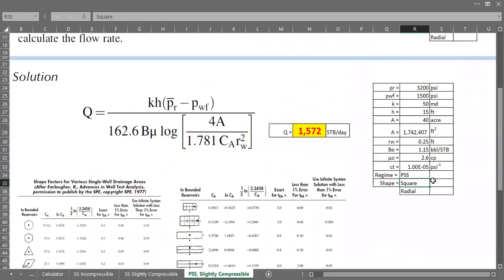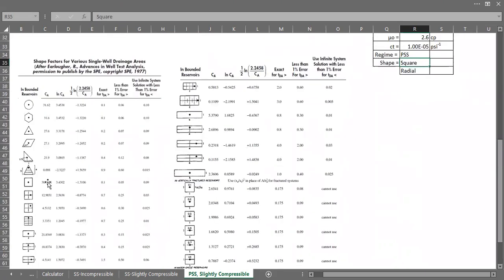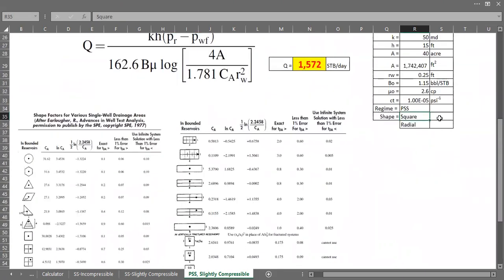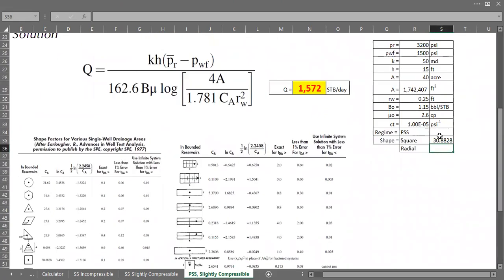Okay, so go back to 40. And then for square, let's just input the shape factor here. For square it's 30.8828, whereas for radial shape it's 31.62.